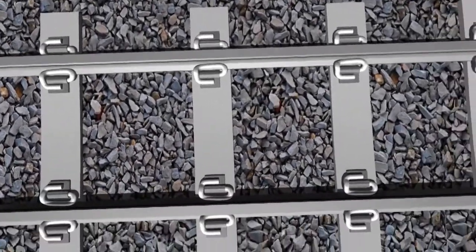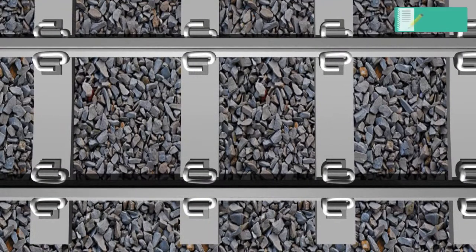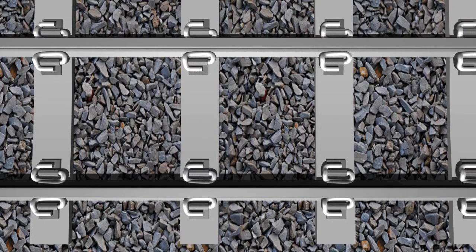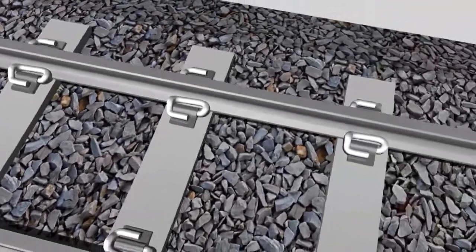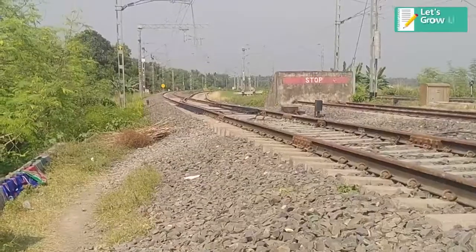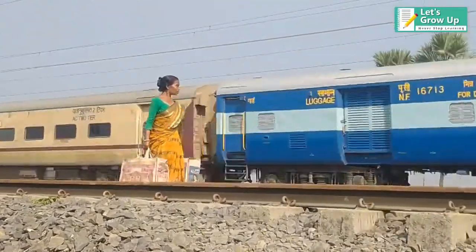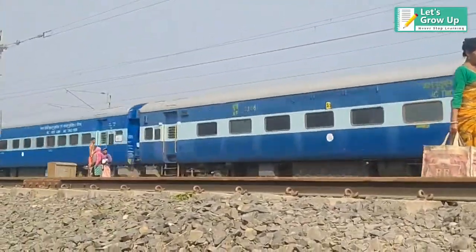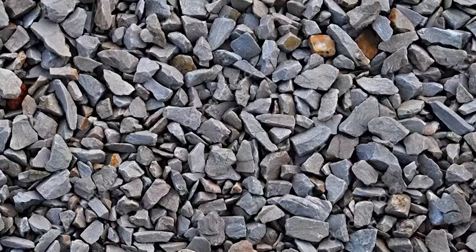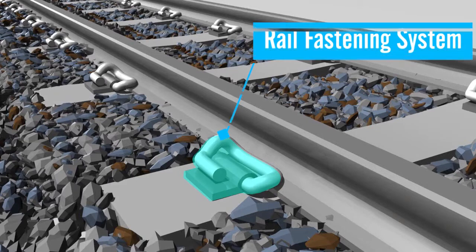Sleepers hold the rails upright and keep them spaced to the correct gauge. Ballast is the name for the stones beneath the track. Track ballast forms the track bed upon which railroad sleepers are laid. It is used to bear the load from the railroad ties, facilitate drainage of water, and keep down vegetation that might interfere with the track structure. The ballast also holds the track in place as trains roll over it and absorbs noise. It typically consists of crushed stone.